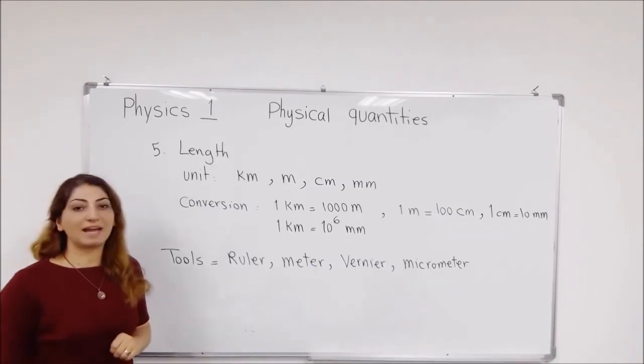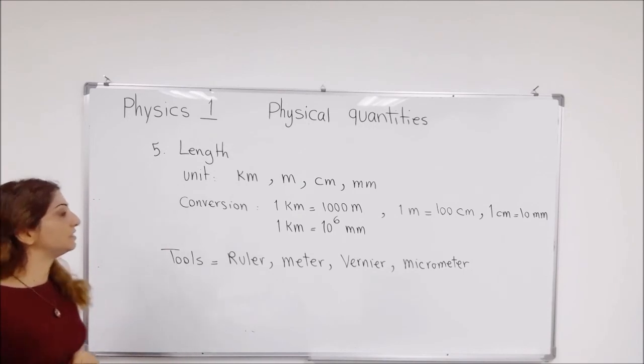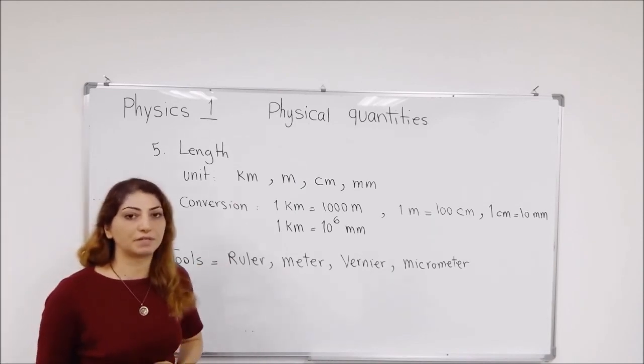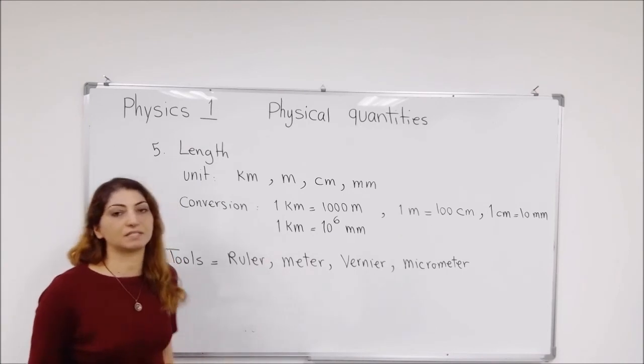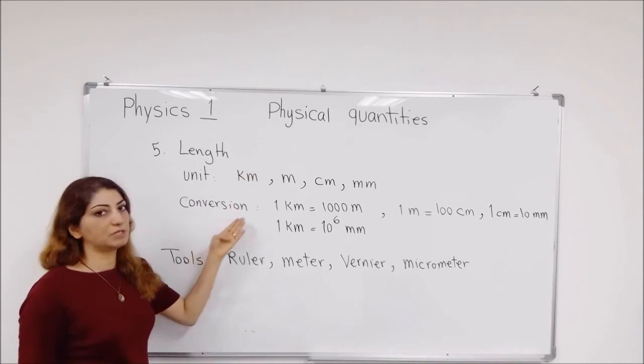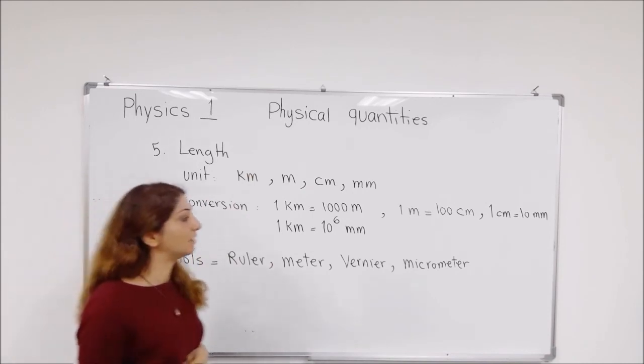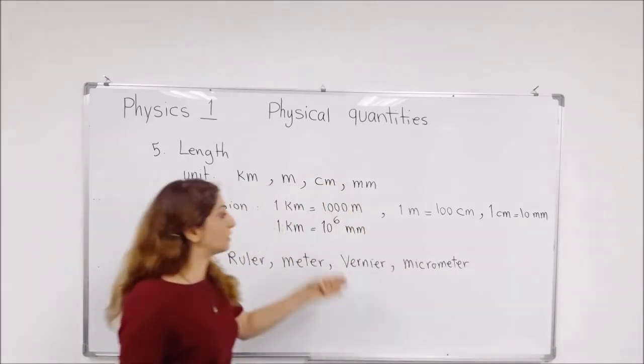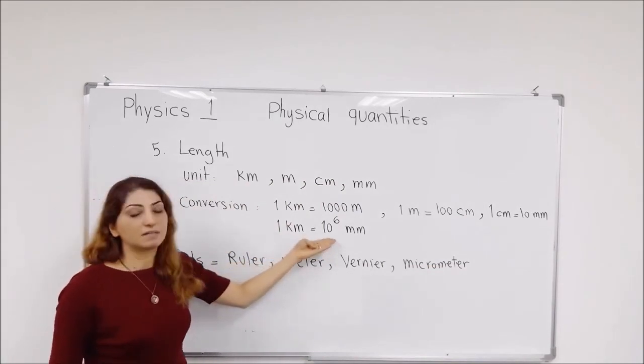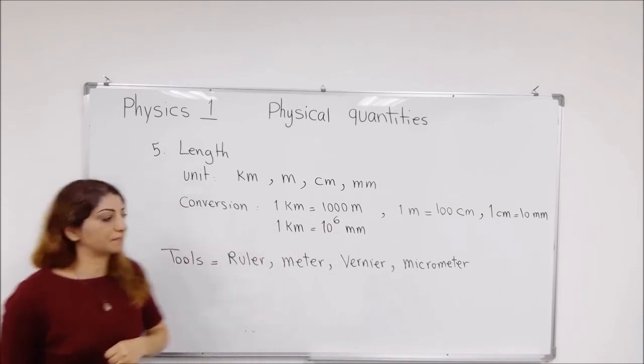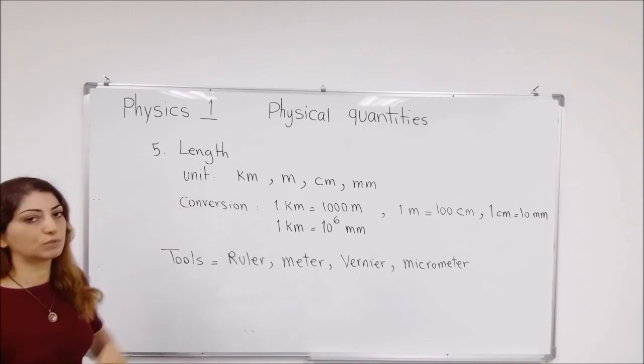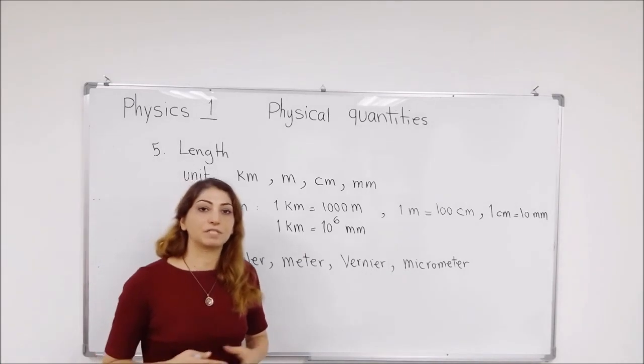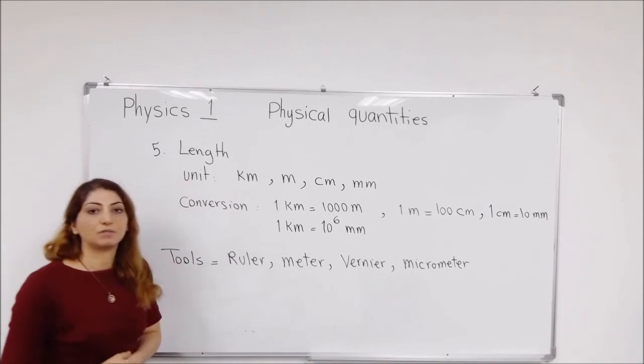At this point, we have length, this quantity. And the unit is measured in kilometers, meters, centimeters, and millimeters. We have multiple units for the ones that I use here and in the following lessons. How to convert them: each one kilometer is 1,000 meters, and one meter equals 100 centimeters. So one centimeter also is equal to 10 millimeters. So overall, one kilometer contains 10 to the 6 millimeters. The tools that we use to measure length or distance between two points is a ruler, meter, vernier caliper, or it can be micrometer screw gauge.